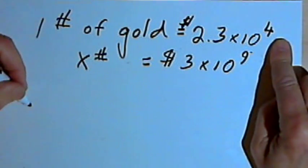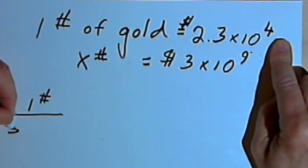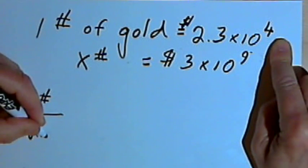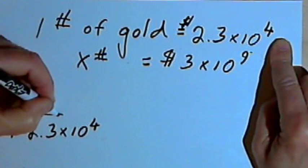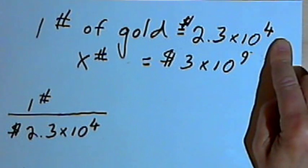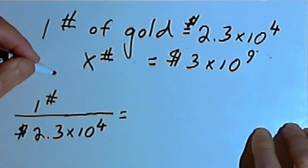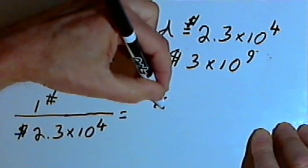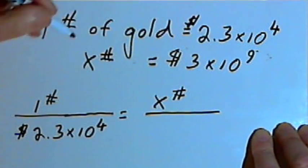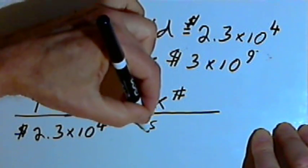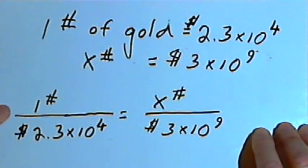The first fraction is going to be 1 pound over 2.3 times 10 to the fourth. That's the fact I started with. And the second fraction is also going to have pounds in the numerator. That's going to be x pounds. And that's going to be over the dollar value, which is 3 times 10 to the ninth.